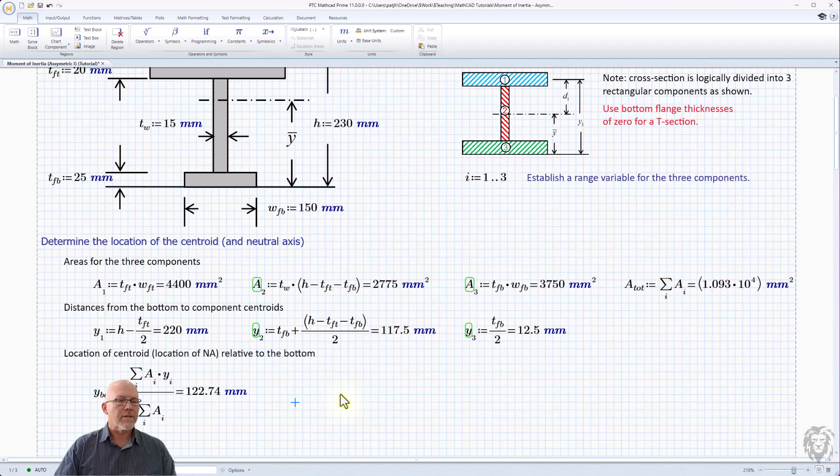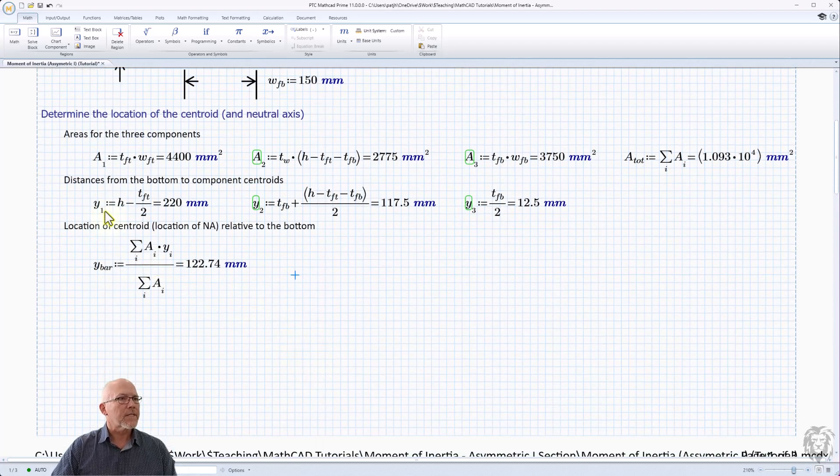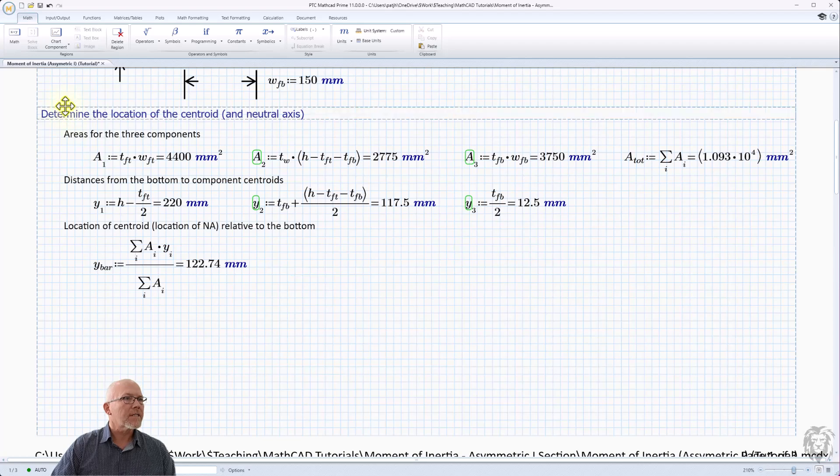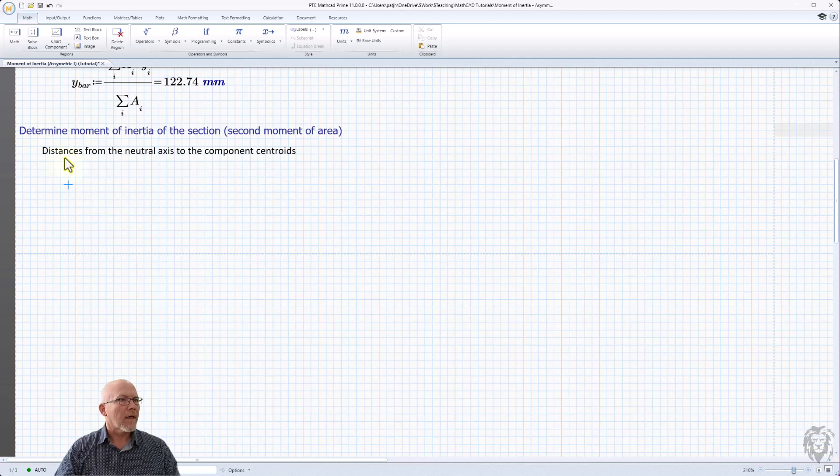The next one is to get the actual moment of inertia, or the second moment of area if you prefer. The first thing you need to know is the distances from the neutral axis, which we now know where it is, to the individual component centroids. We typically denote those as d within the parallel axis theorem formula. So we're going to set that up.